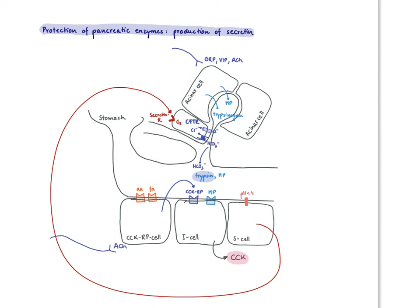That's how bicarbonate is released via the stimulation of a chloride channel and through this anion exchange. The bicarbonate reaches the duodenum and can protect all these enzymes released from the neighboring acinar cell.